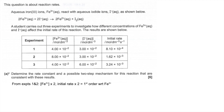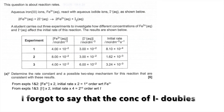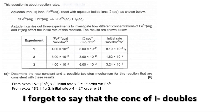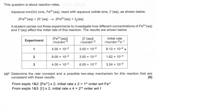From experiments one and two, the I⁻ concentration is held at 3×10⁻² mol dm⁻³, the Fe³⁺ concentration has doubled, and so has the rate — so it's first order with respect to Fe³⁺. To get the order with respect to I⁻, we look at experiments one and three, where Fe³⁺ is held constant. The initial rate has gone up four times, so it's second order with respect to I⁻.